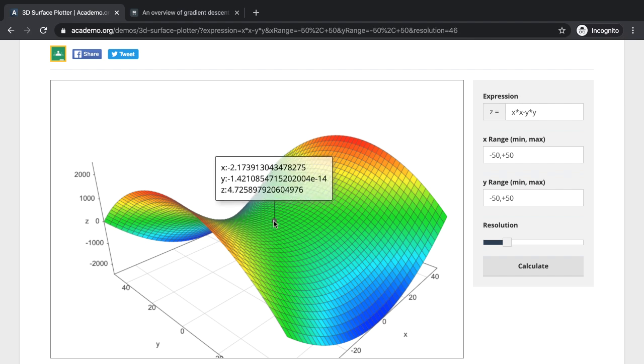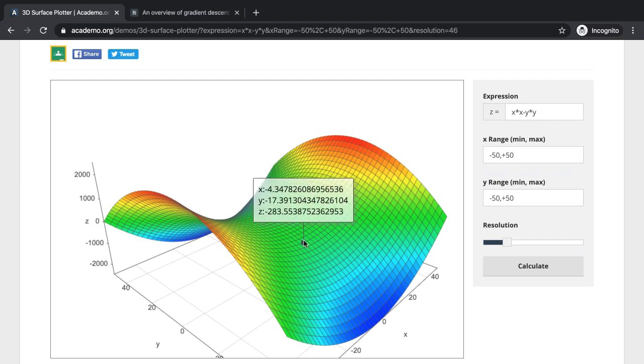If I were to start somewhere up here, on the saddle point, my optimizer would go down in one direction of the y-axis, like how my cursor is moving.